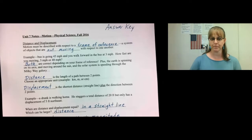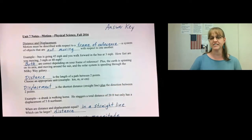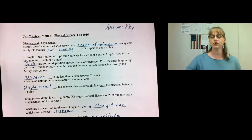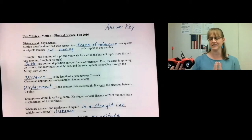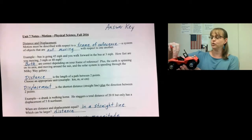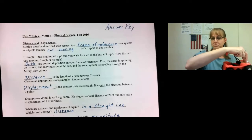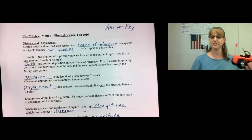Let's start with motion in general. Motion must be described with respect to a frame of reference. A frame of reference is a system of objects that are not moving with respect to one another. For example, let's say that you're inside a bus going 45 miles per hour — I know this is not a bus, but pretend — so it's going 45 miles per hour. You are inside the bus, and you are walking forward inside the bus at 3 miles per hour, and the bus itself is going 45.